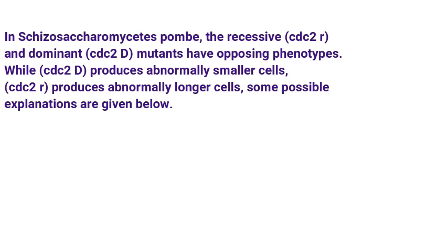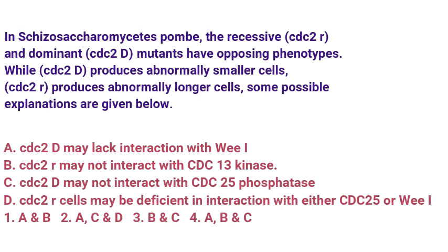Question: In Schizosaccharomyces pombe, the recessive and dominant mutants have opposing phenotypes. While CDC 2D (dominant) produces abnormally smaller cells, CDC 2R (recessive) produces abnormally longer cells. Some possible explanations given are: CDC 2D may lack interaction with V1; CDC 2R may not interact with CDC 13 kinase; CDC 2D may not interact with CDC 25 phosphatase; CDC 2R cells may be deficient in interaction with either CDC 25 or V1. Which combination of the above statements is correct?